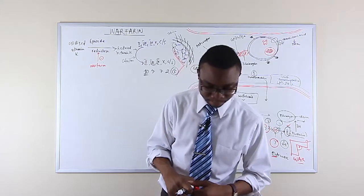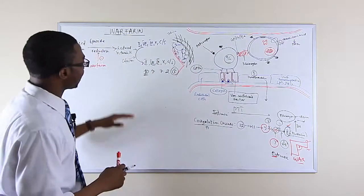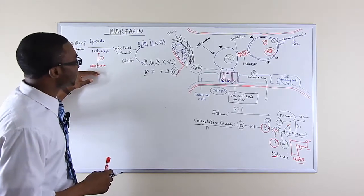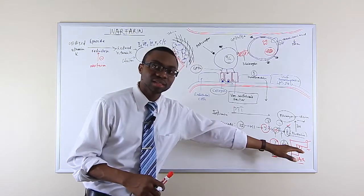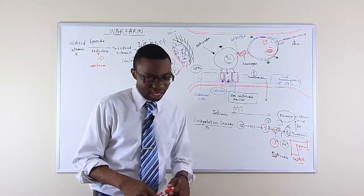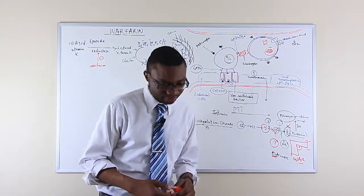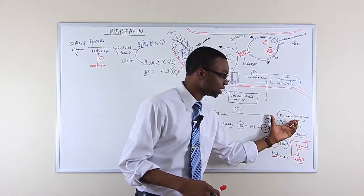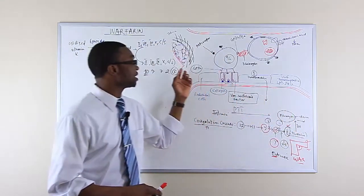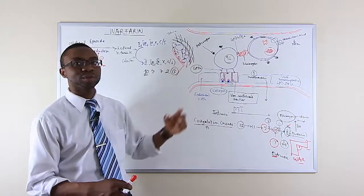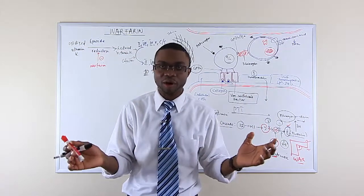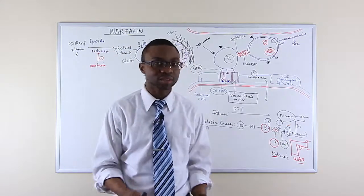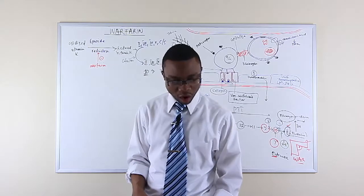So as you can see here, this is how warfarin causes anticoagulation. The blood is now well anticoagulated and the blood is thin because if we can't make all these cofactors to make fibrinogen, we can't make fibrin. All these platelets are very fragile and unstable, they're going to fall apart and the patient is going to bleed a lot. So that is how warfarin works.